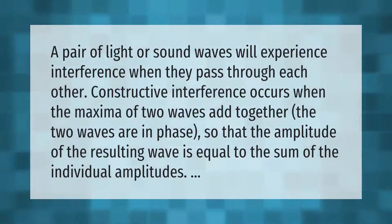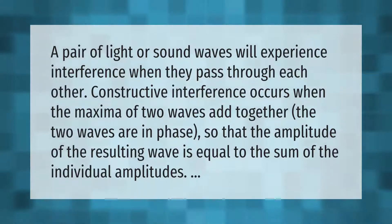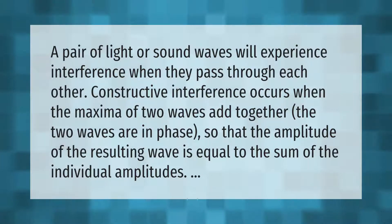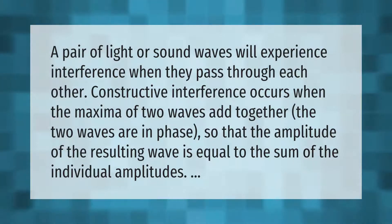A pair of light or sound waves will experience interference when they pass through each other. Constructive interference occurs when the maxima of two waves add together — the two waves are in phase — so that the amplitude of the resulting wave is equal to the sum of the individual amplitudes.